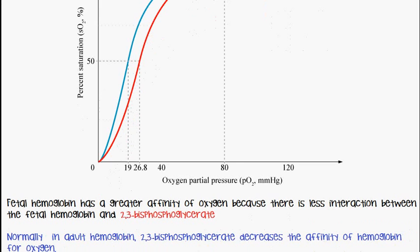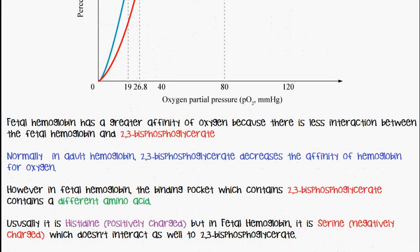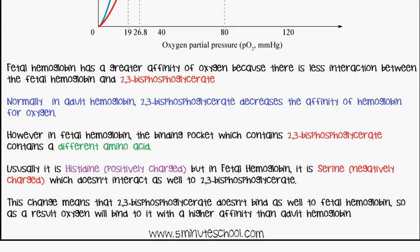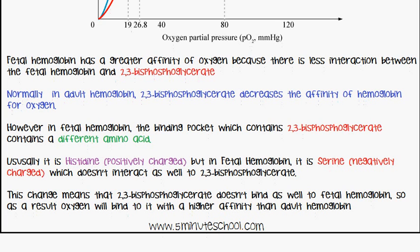This occurs because of something known as 2,3-bisphosphoglycerate. This is present in both adult hemoglobin and fetal hemoglobin. But in fetal hemoglobin, it has less interaction with the hemoglobin. Fetal hemoglobin has a greater affinity for oxygen because there is less interaction between the fetal hemoglobin and 2,3-bisphosphoglycerate.